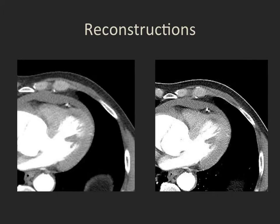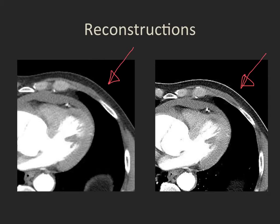This is the same set of data from the same patient, looking lower in the thorax at the heart. On the left is the smoother soft tissue reconstruction. On the right is the same data displayed with a lung reconstruction — much grainier, crisper, and more contrasty for soft tissue structures, which is less pleasing for interpretation. So we look at soft tissues on a soft tissue reconstruction and the lung on the lung reconstruction.